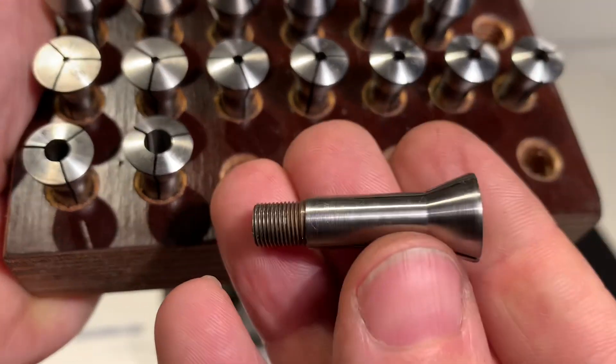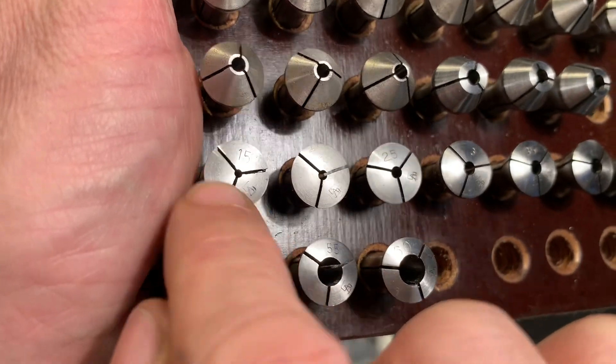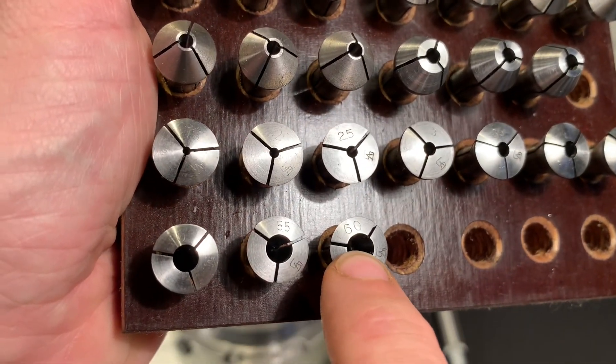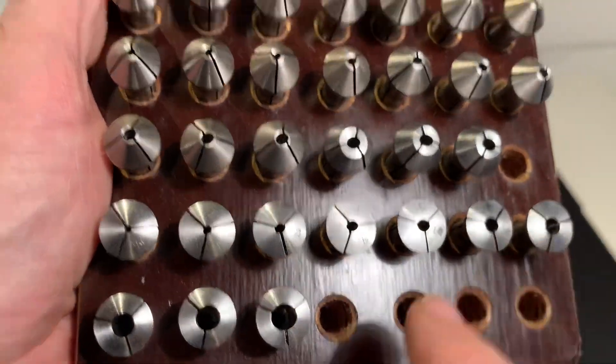They are in super condition and it starts here with 1.5 and it ends with a 6.0, so that's 6 millimeter. Every time there's an increment of a half a millimeter.